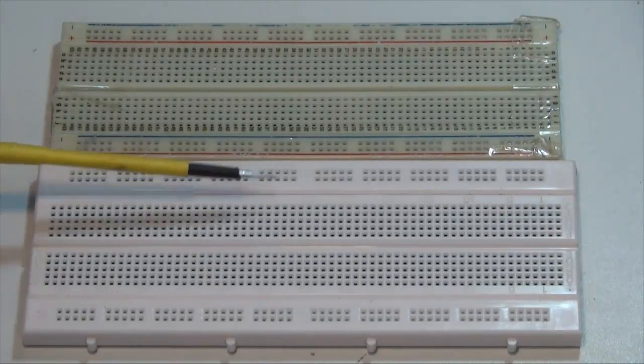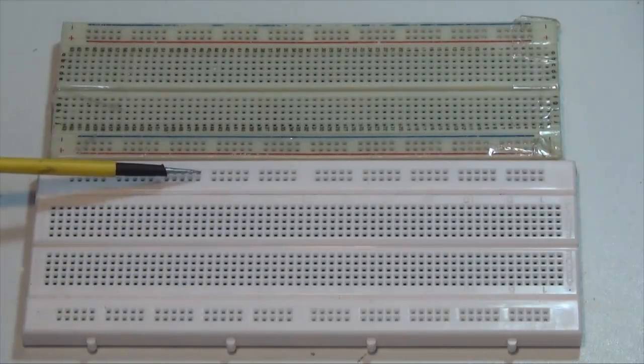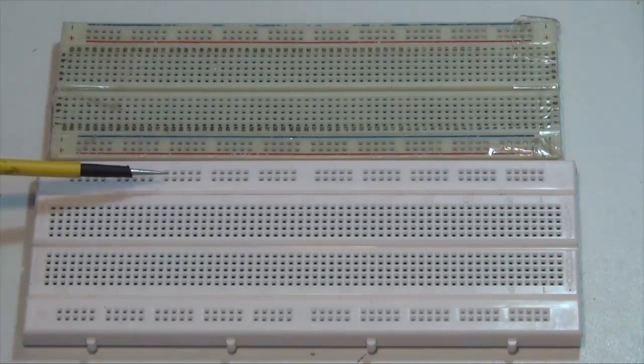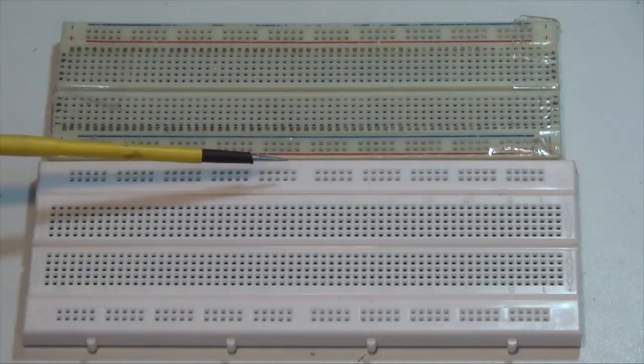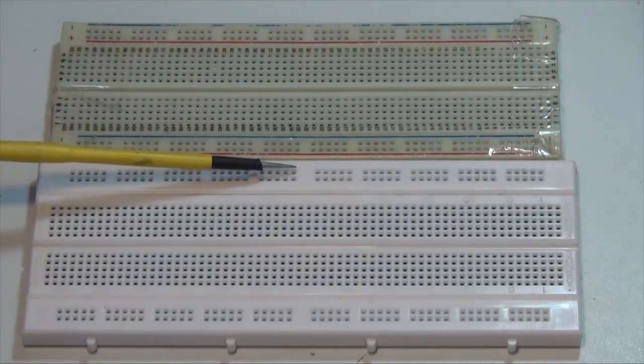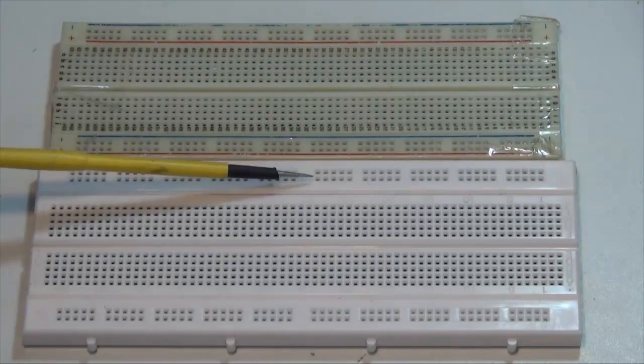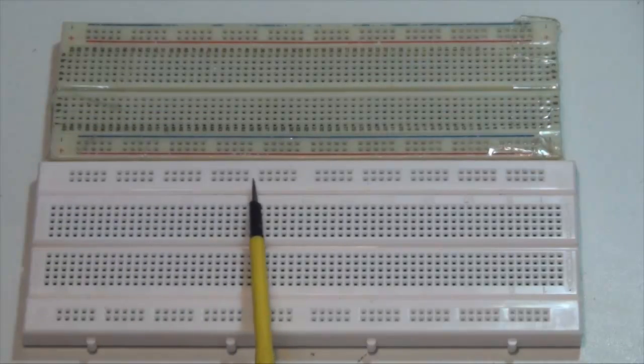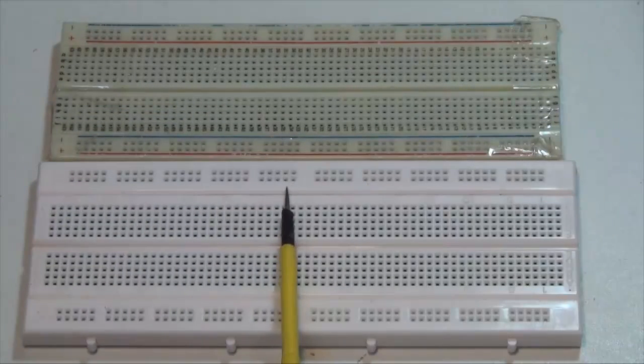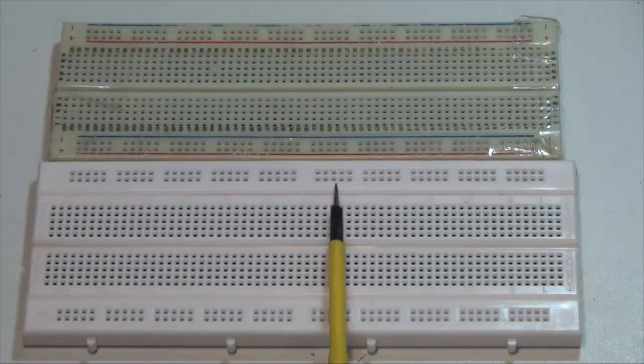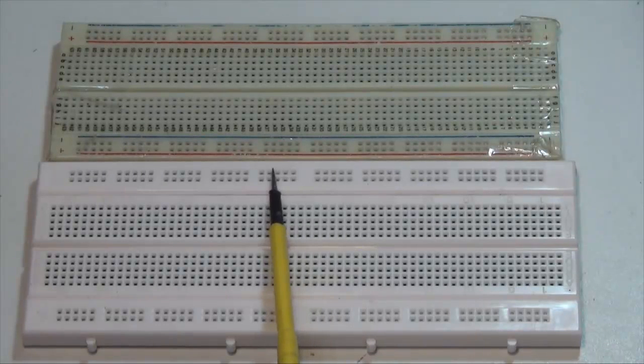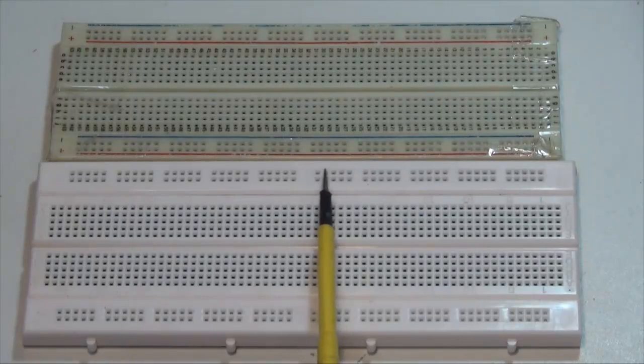Although we don't have any red or blue lines, you'll notice that the spacing between the groupings of five holes are the same, except for when we get into the middle, where there's a little wider spacing. So what that means is that this group of five holes here is not connected to this group of five holes. And this group of five is not connected to this group.